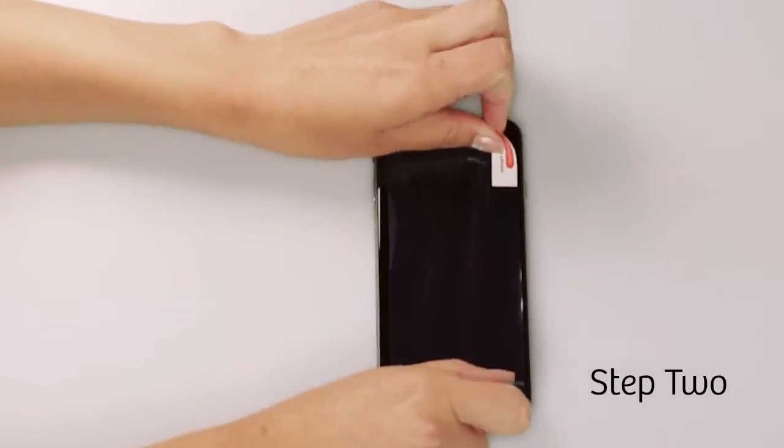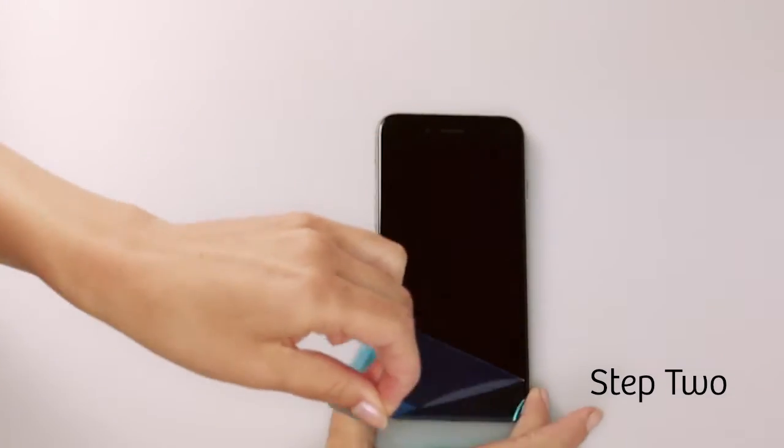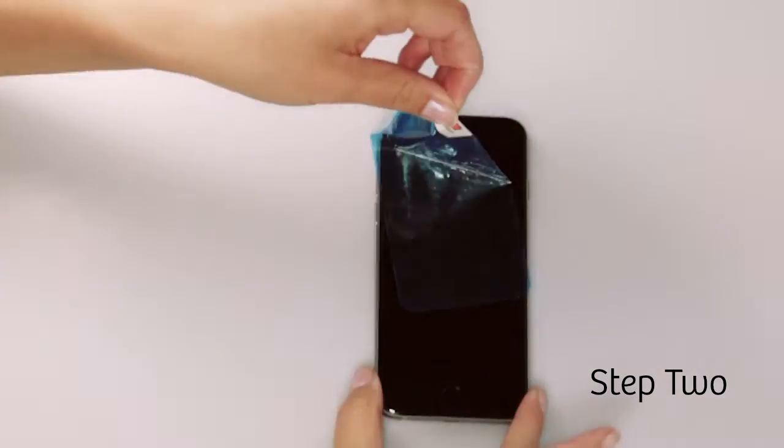Step two: apply the blue full-size adhesive dust removing film to peel off any particles that are left on the screen.